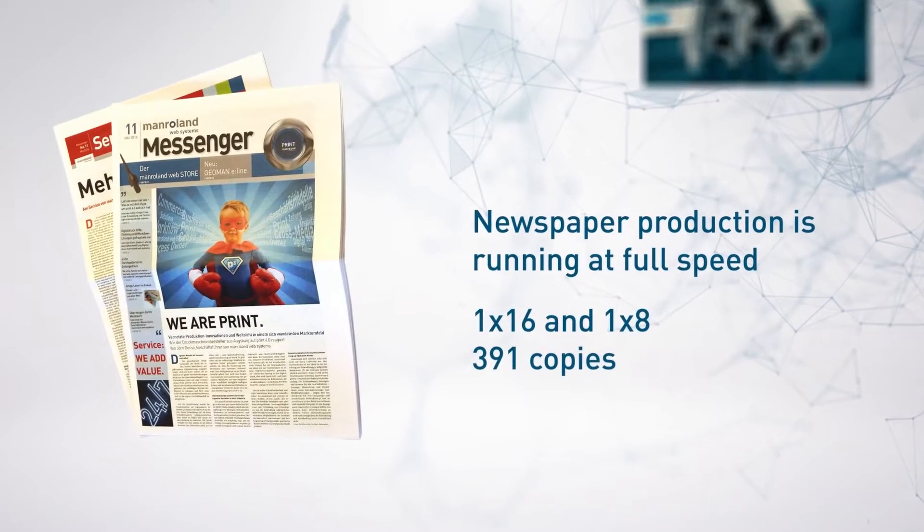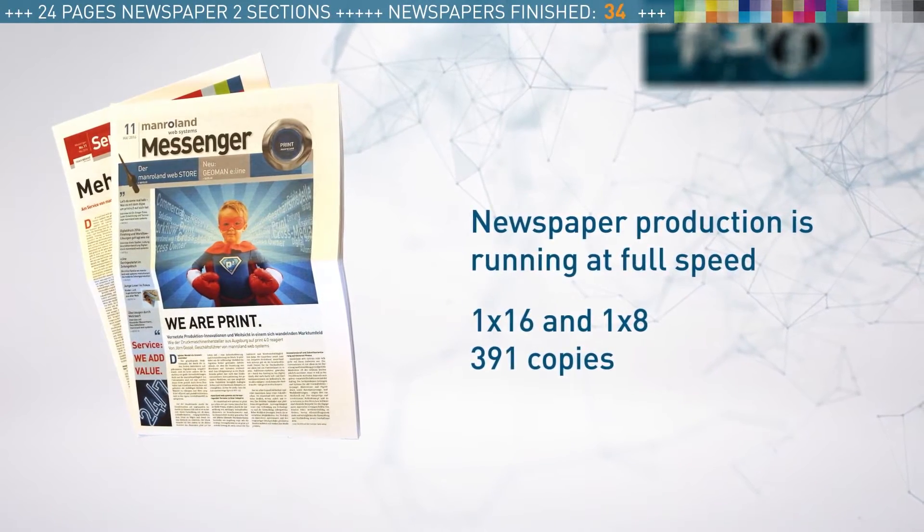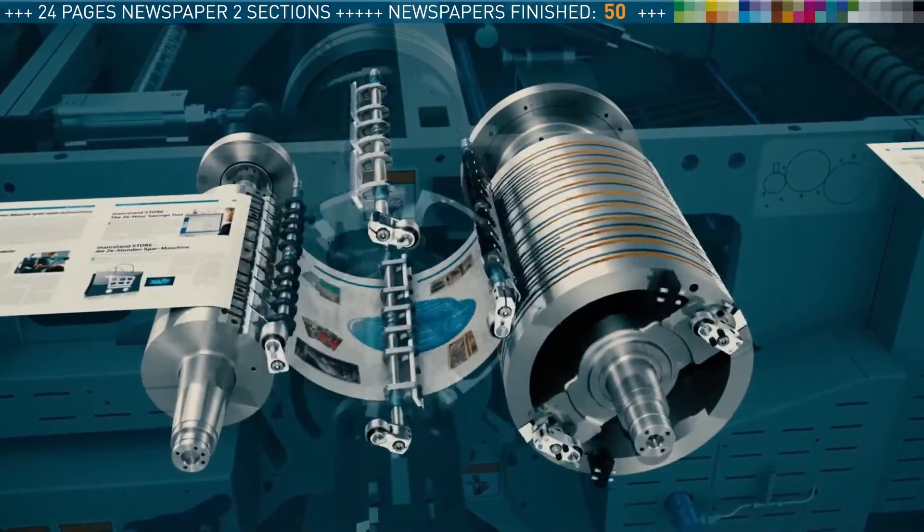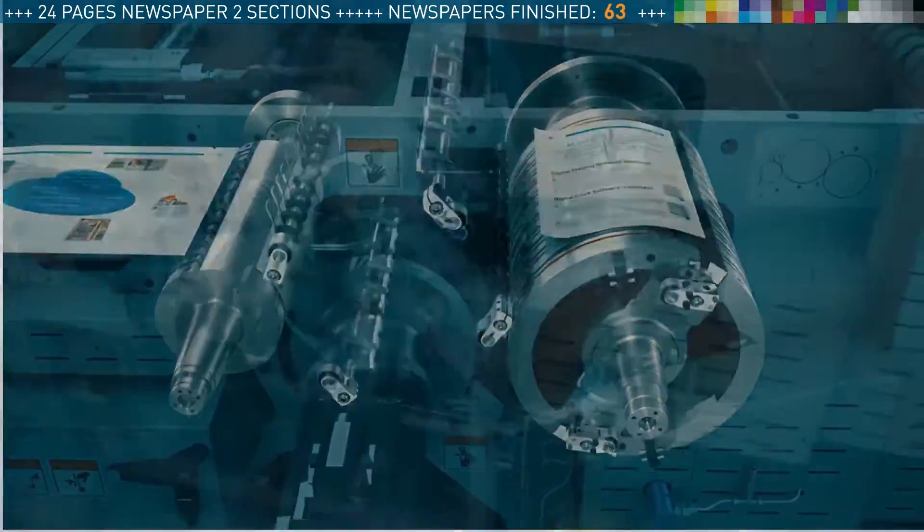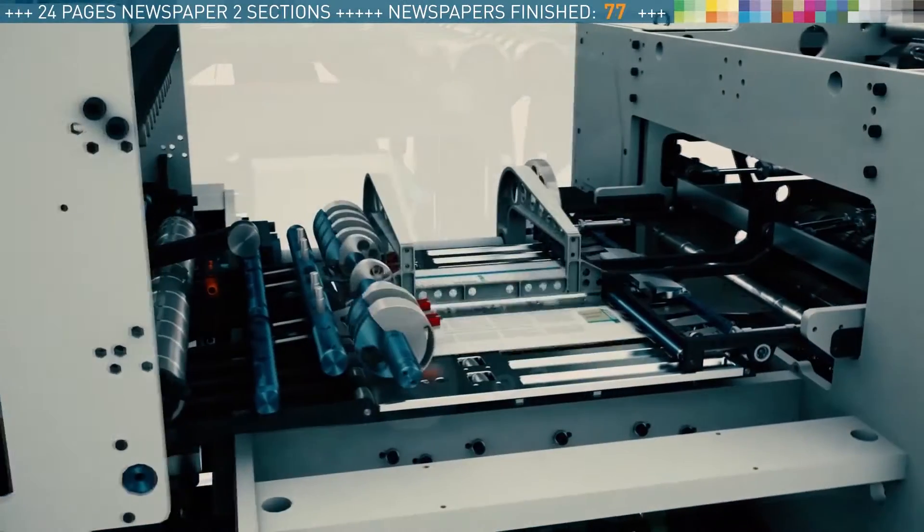We start to produce the 24-page edition with 1x16 and 1x8 pages. The sections are collected at the cylinder. The sections are collected at the quarter fold.